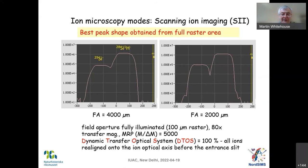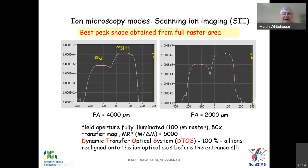With scanning ion imaging, using a relatively modest raster of 100 micrometers, we can go bigger and still retain these peak flats — something you cannot do with direct ion imaging. So you can image a much bigger area with scanning ion imaging while maintaining full mass resolution performance.